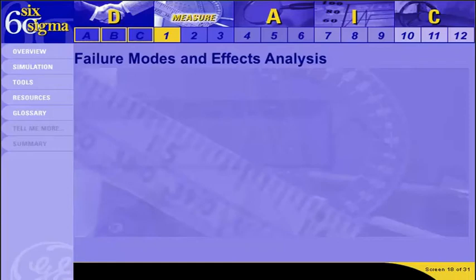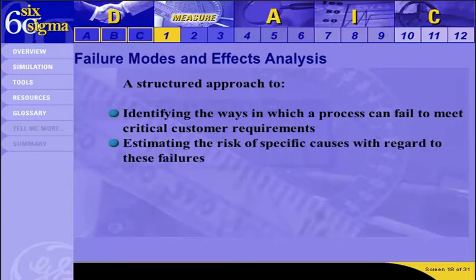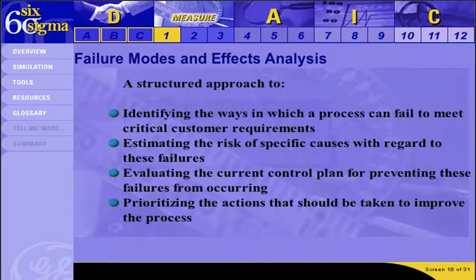The last tool we are going to look at is a Failure Modes and Effects Analysis, or FMEA for short. FMEA is a structured approach to identifying the ways in which a process can fail to meet critical customer requirements, estimating the risk of specific causes with regard to these failures, evaluating the current control plan for preventing these failures from occurring, and prioritizing the actions that should be taken to improve the process. FMEA is an ideal approach to documenting and tracking risk reduction actions, particularly when the consequence of a failure is severe.